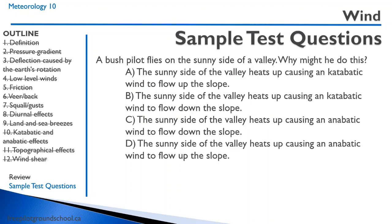A bush pilot flies on the sunny side of a valley — why might he do this? On the sunny side of a valley, the pilot is taking advantage of anabatic winds which flow up the slope. The hot air flows up the slope. The correct answer is D: the sunny side of the valley heats up, causing an anabatic wind to flow up the slope.